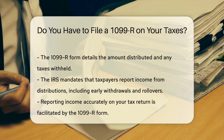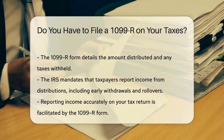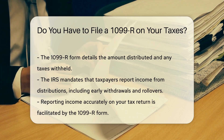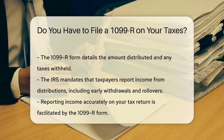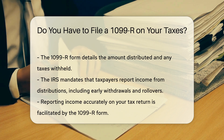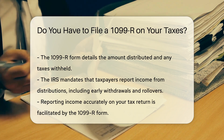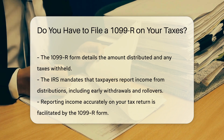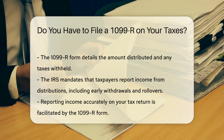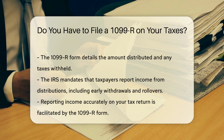The IRS requires taxpayers to report income from distributions. This includes early withdrawals and rollovers. The 1099-R form helps ensure that you accurately report this income on your tax return.